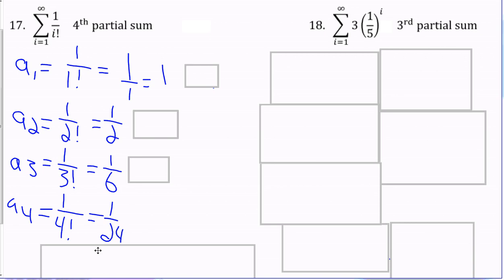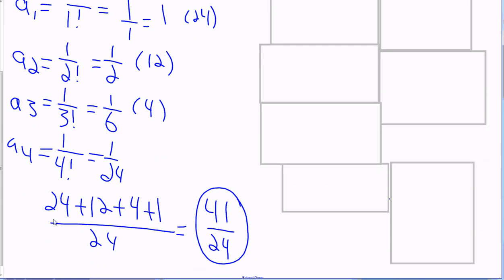And now, these are, we can't just write these as 1 plus this. We're just going to add them together. Now, for simplicity purpose, I just would prefer that these are all in 24ths. So, we've got 24 24ths here. This is going to be 12 24ths. This is going to be 4 24ths. 24 plus 12, 36, plus 4, 40, plus 1, 41 24ths is my final answer.